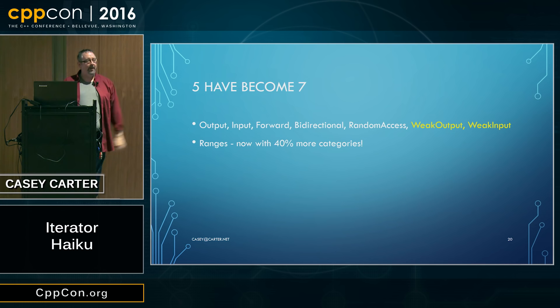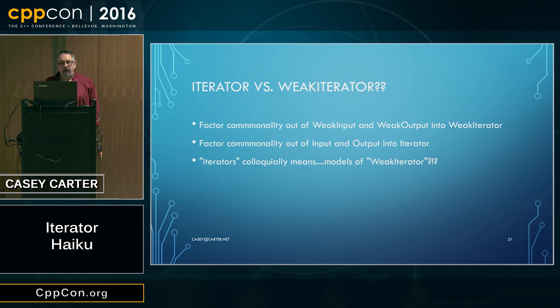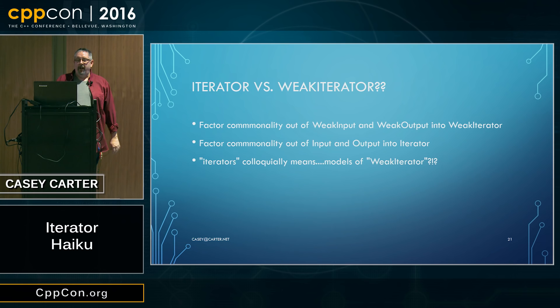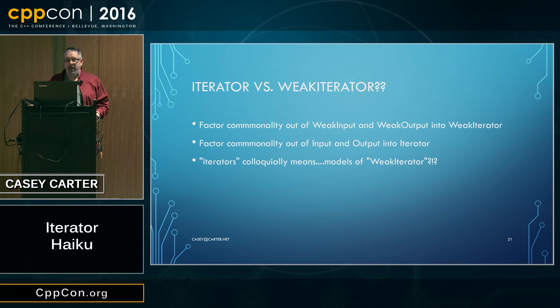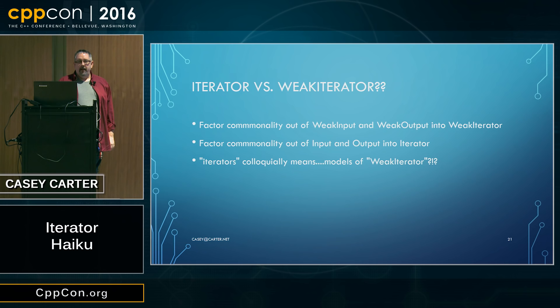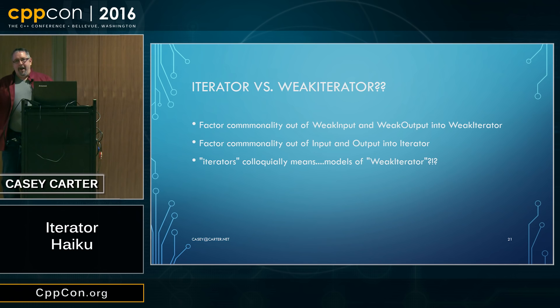We also decided we needed to factor out the commonality of the weak input and weak output iterator concepts into a plain weak iterator concept, and factor the commonality of the strong input and output into a plain iterator concept. Unfortunately, this means that in the text of the Ranges TS, the word 'iterators' colloquially means things that satisfy weak iterator — which is extremely weird, because other uses of terms colloquially in the standard mean things that satisfy the concept with the same name.